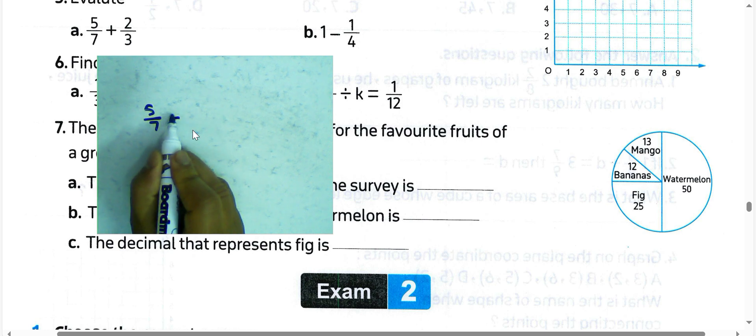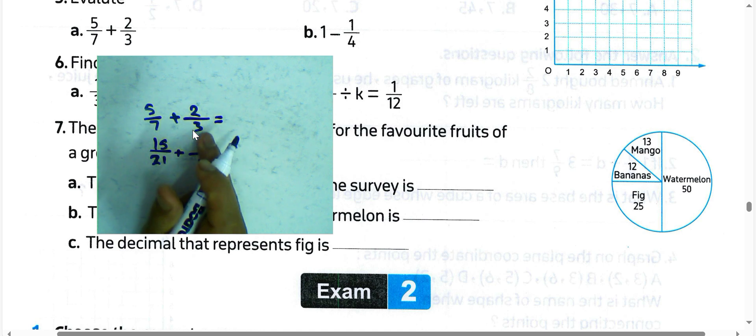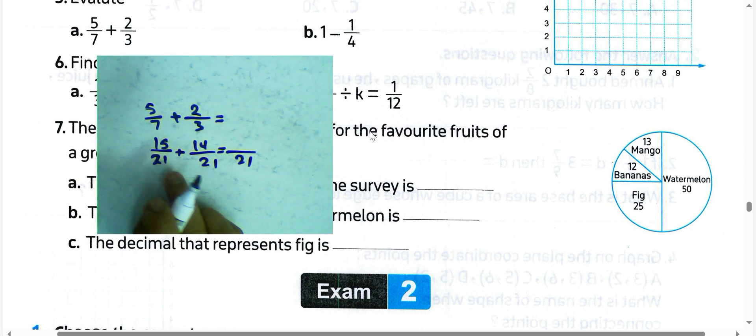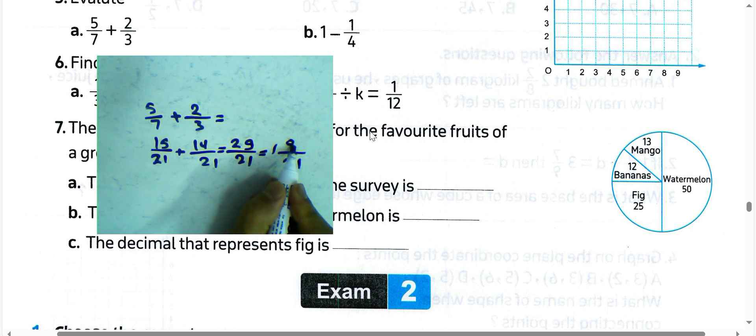Evaluate 7/3 plus 2/3. We can write the least common multiple between the two denominators: 3 times 7 is 21, 3 times 5 is 15. In the numerator, 5 plus 4 is 9, and 1 plus 1 equals 2, giving 29/21. Convert to mixed number: 29 divided by 21 equals 1 and 8/21.